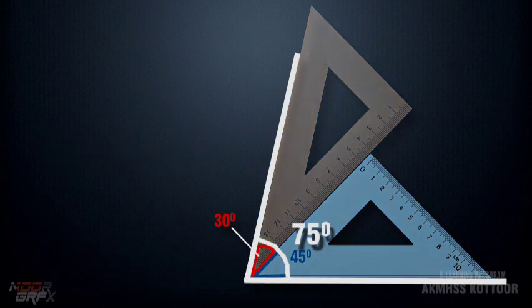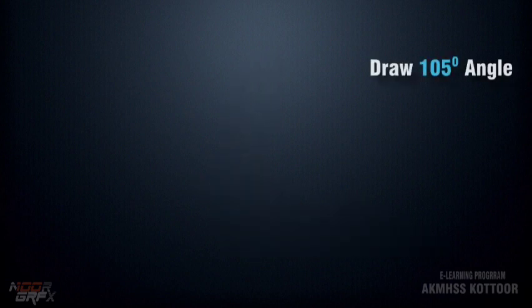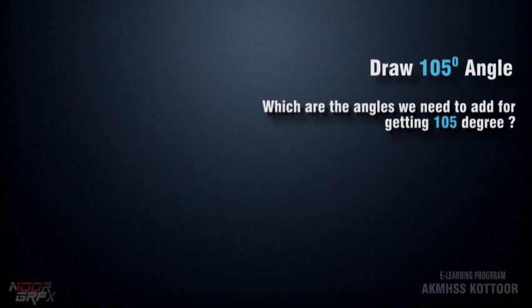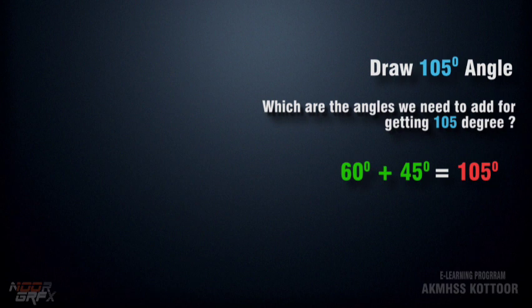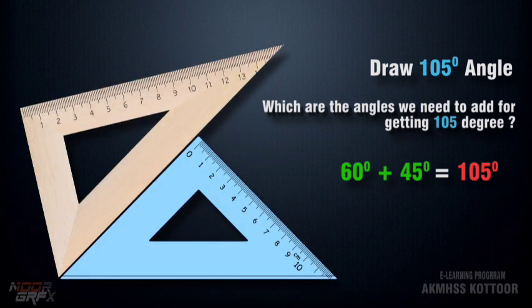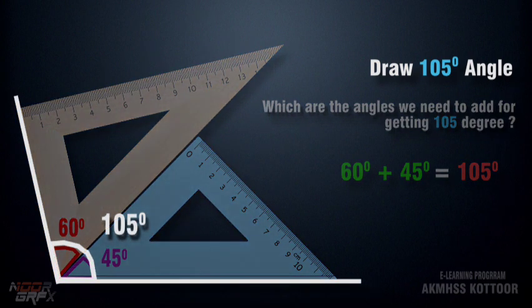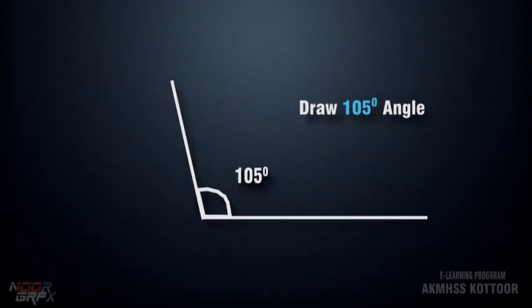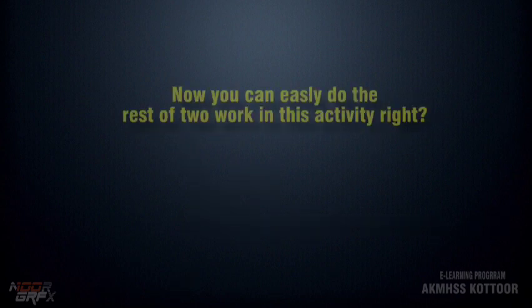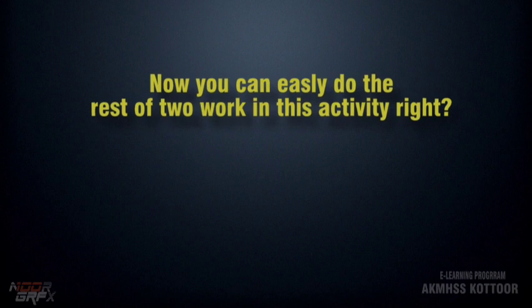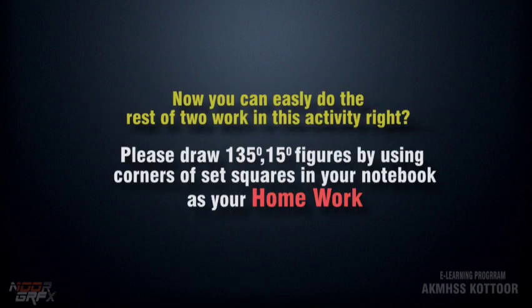We get 75 degrees and 105 degrees. Now let's see how to draw 105 degrees. The angles we need to add are 60 and 45. We place the two set squares like this to get 105 degrees. You can now easily do the remaining two: please draw 135 degrees and 15 degrees using corners of the set square in your notebook.